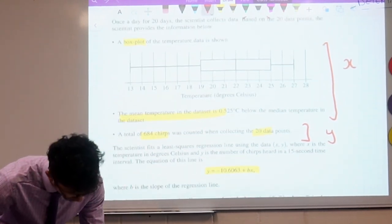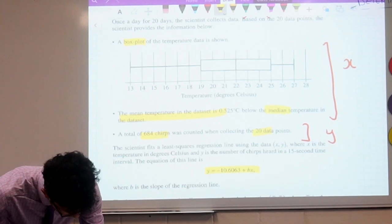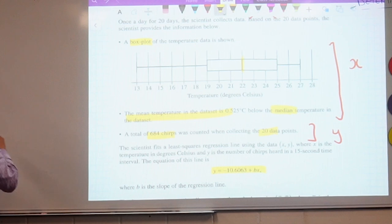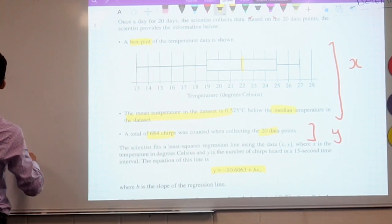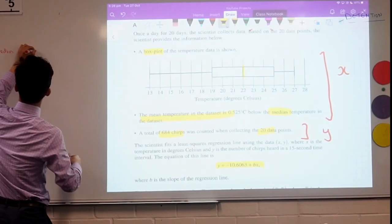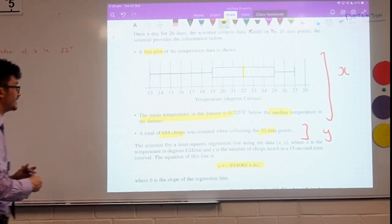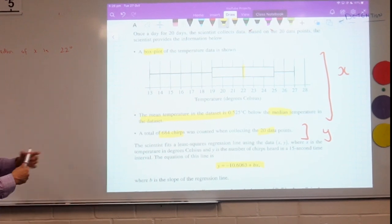The median first, we want to work out. So the median temperature is, we know from a box and whisker plot, that value here. So the median of x, right over here, the median of x is 22 degrees. And I know that the mean temperature is 0.525 degrees below the median.